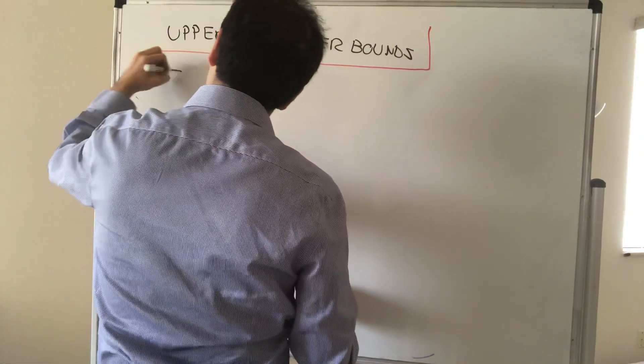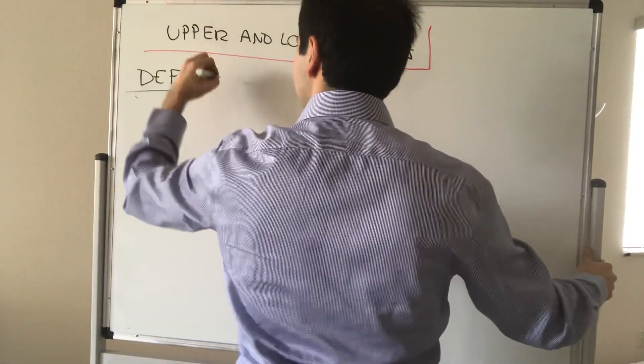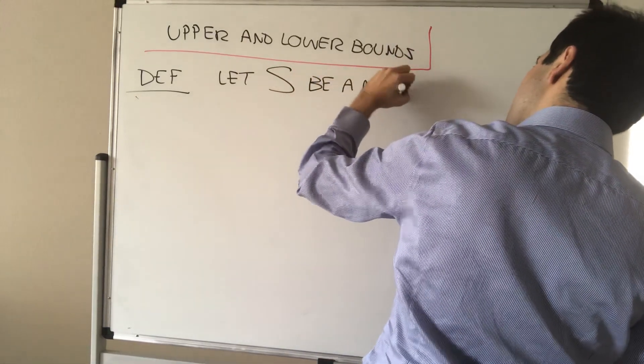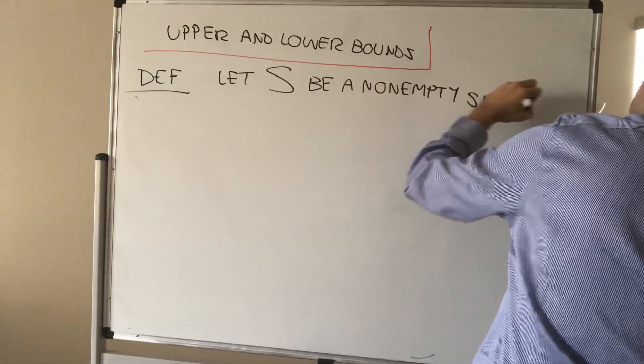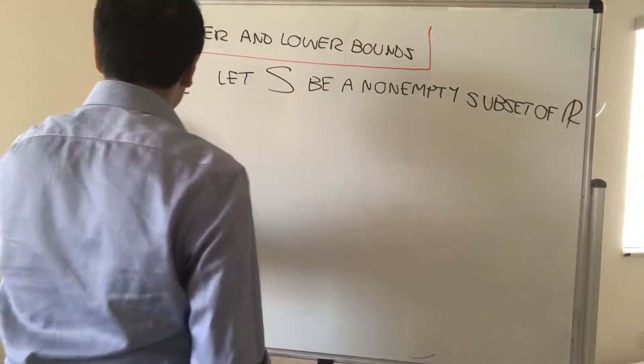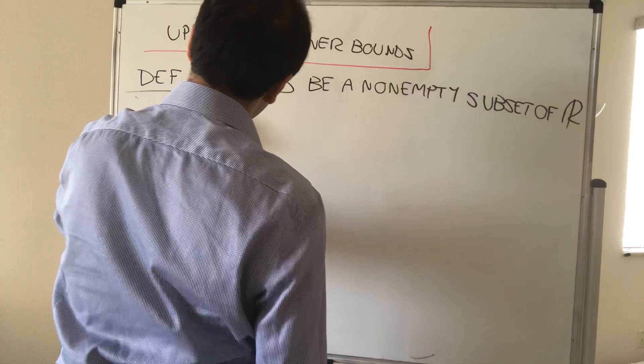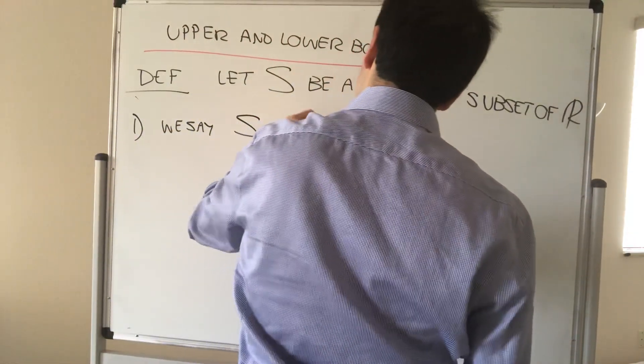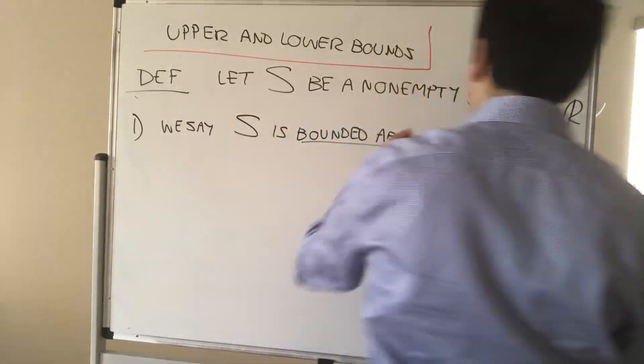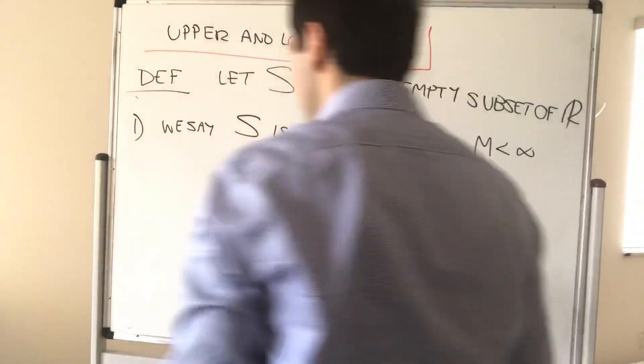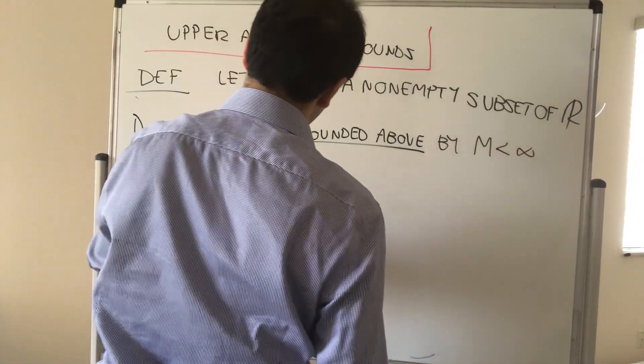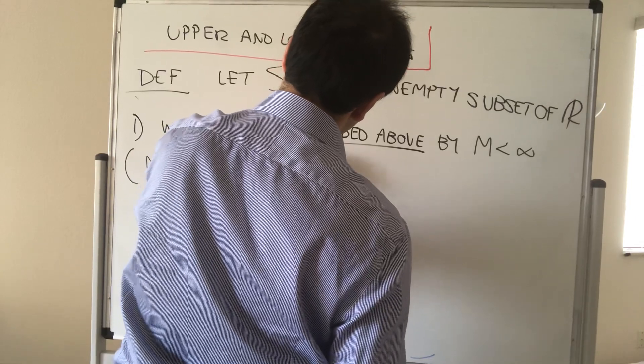So, definition. Again, let S be a non-empty subset of R. Then we say S is bounded above by M, so some finite number M, or similarly M is an upper bound for S.